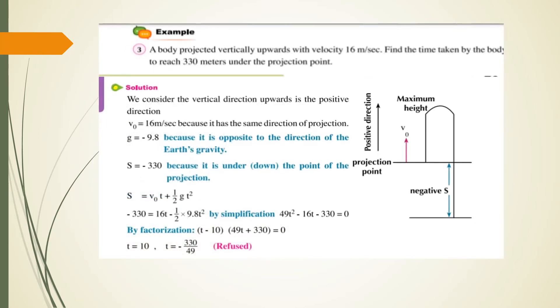A body projected vertically upward with velocity 16 meters per second. Find the time taken by the body to reach 330 meters under the projection point. We consider the point when the body is under the action of gravity.